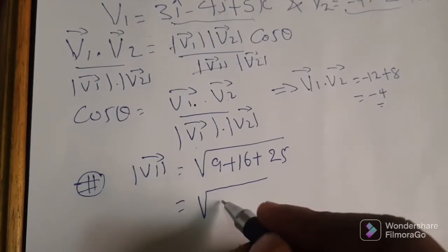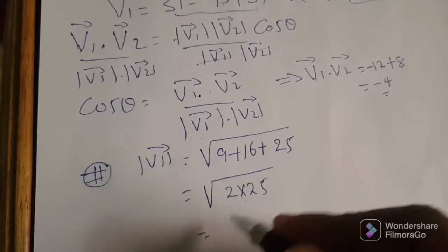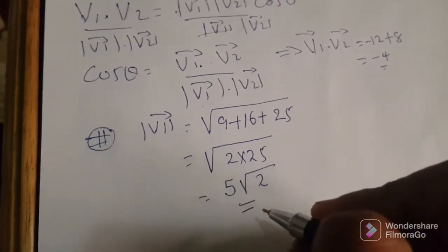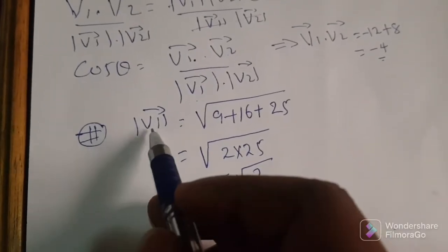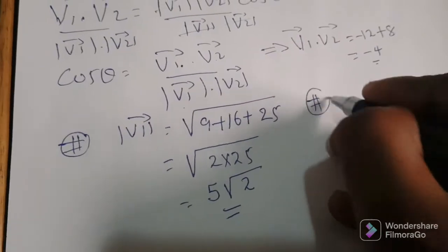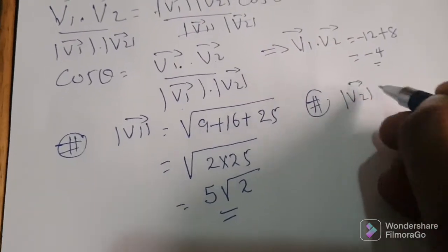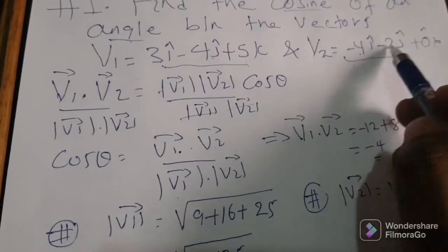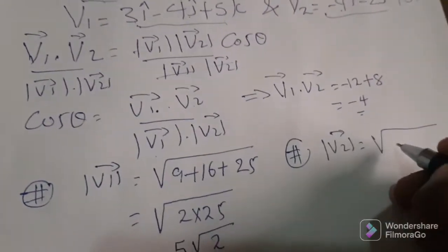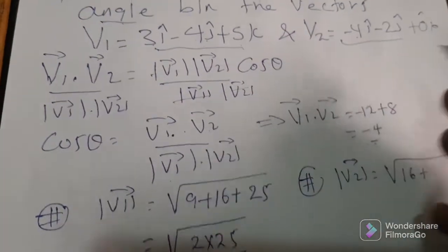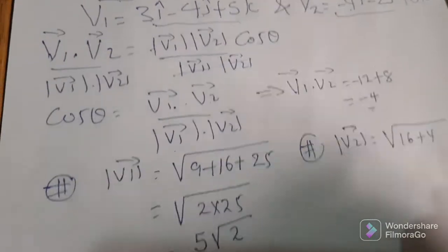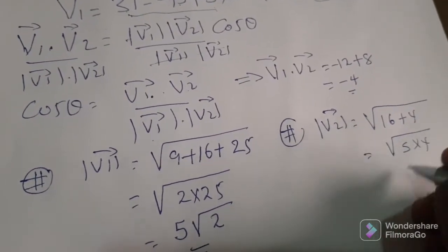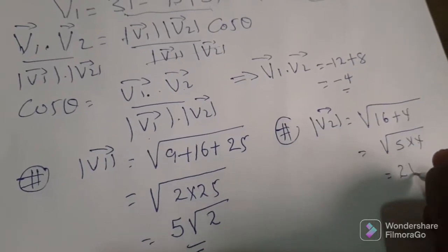The norm of V1 gives us radical 50, which simplifies to 5 radical 2. The norm of V2: negative 4 squared is 16, plus negative 2 squared is 4, plus 0 squared is 0. Radical of 16 plus 4 is radical 20, which simplifies to 2 radical 5.